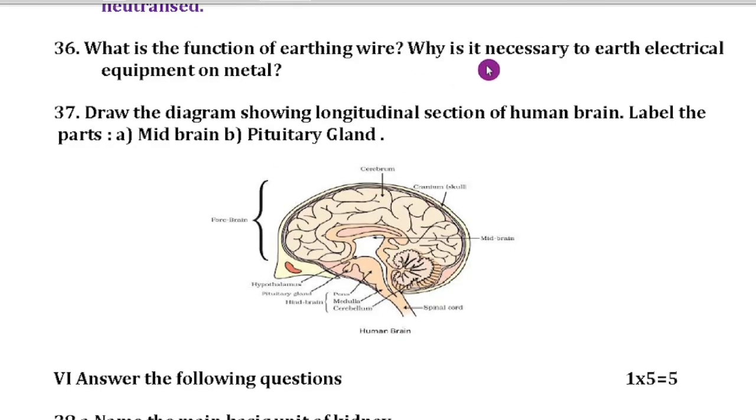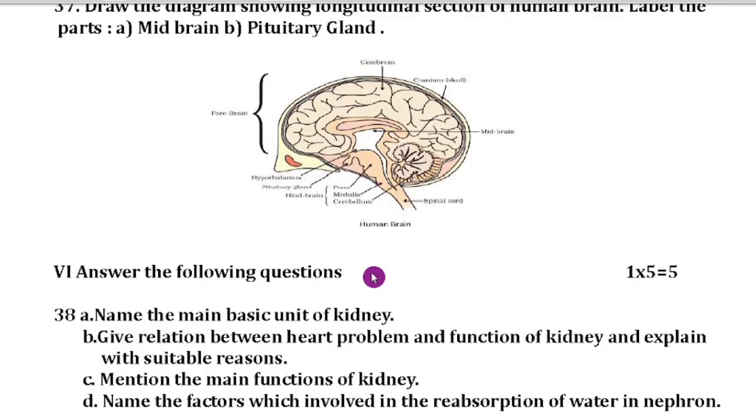Question number 37: What is the function of earthing wire? Why it is necessary to earth electrical equipment? This question by mistake I have not given. It is a direct question from your textbook. Question number 37: Draw the diagram showing longitudinal section of human brain. Label the parts that is midbrain and pituitary gland. This is the pituitary gland and this is the midbrain. Diagram is very important children. Heart and brain both the diagrams you have to practice thoroughly.